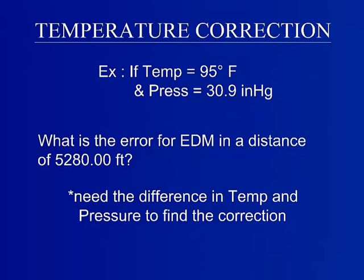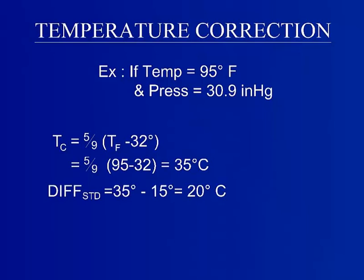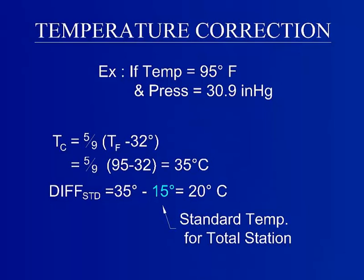In order to find the error, the difference from the standard temperatures and pressures for specific equipment is required. First convert the temperature from degrees Fahrenheit to degrees Celsius. Next find the difference from the standard temperature. The standard temperature for the purpose of this example is 15 degrees Celsius, as seen highlighted in blue.